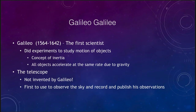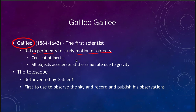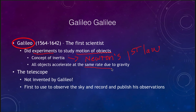One of the other great astronomers of the Renaissance was Galileo. Galileo was in a way the first scientist in terms of experimentation — he did experiments to study the motions of objects, gave us the concept of inertia that would eventually become Newton's first law, and found that all objects accelerate at the same rate due to gravity, regardless of whether it was a less massive or more massive object.